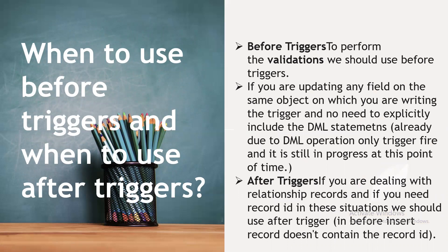When do we use before triggers and when do we use after triggers? This is also a frequently asked interview question. Before triggers are used to perform validation, or when you are updating a field on the same object — no need to explicitly include DML statements. After triggers are used when you want to update child objects or related objects.